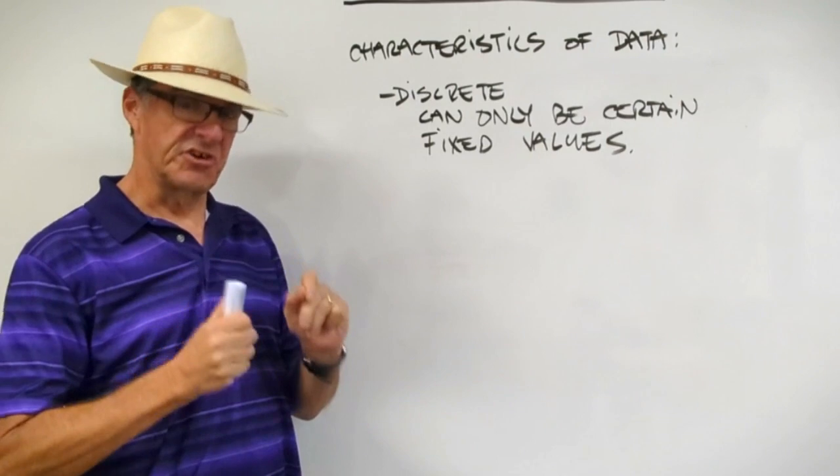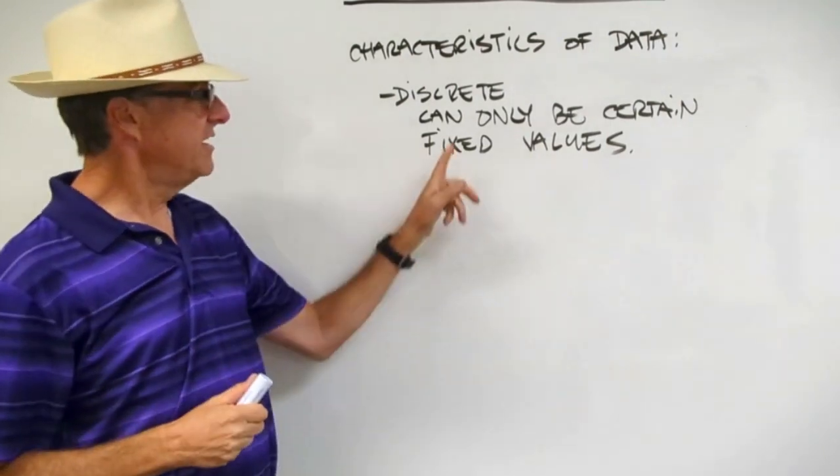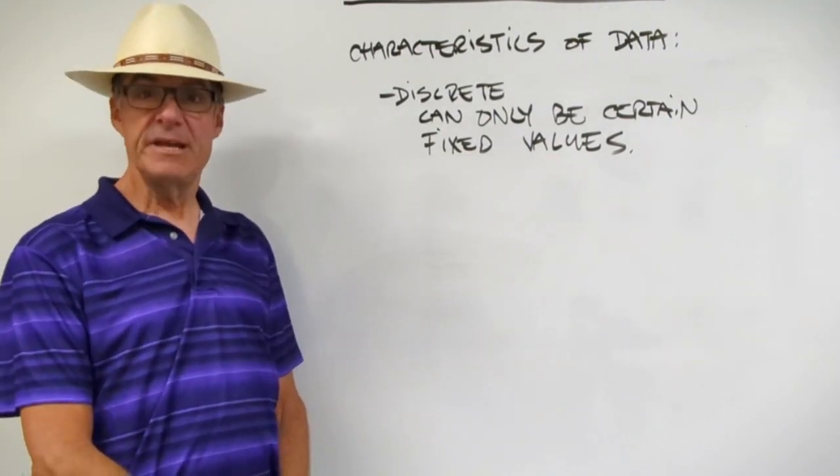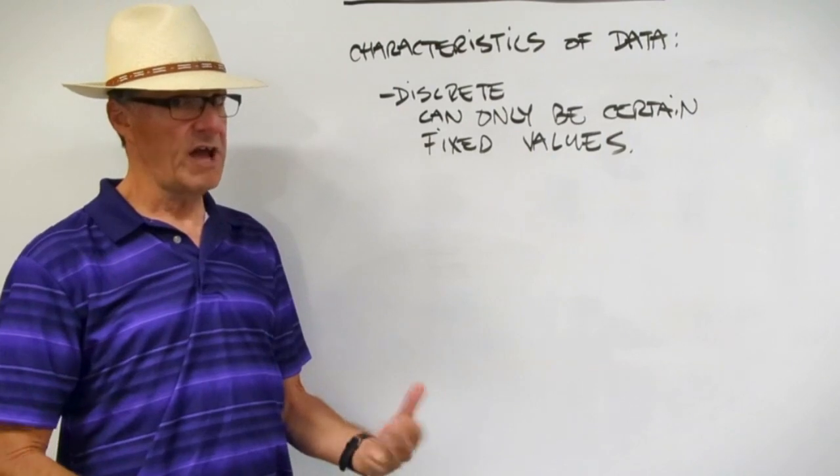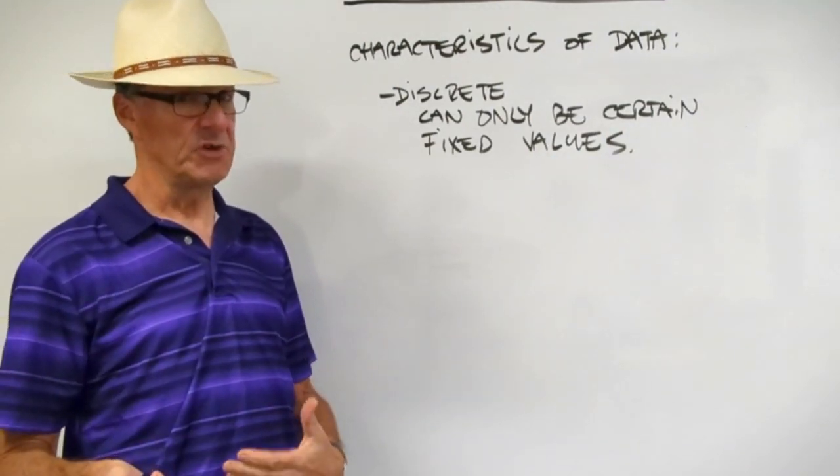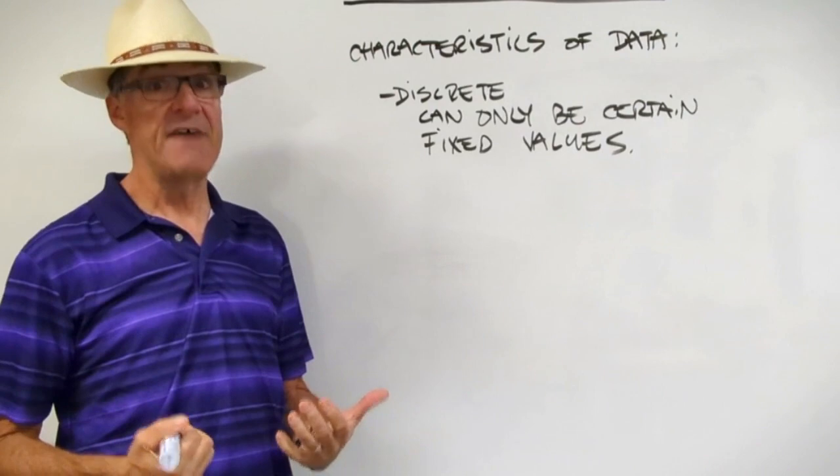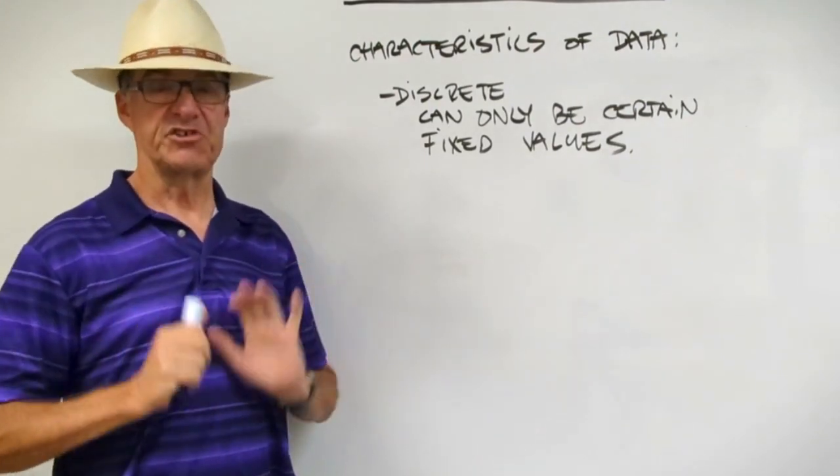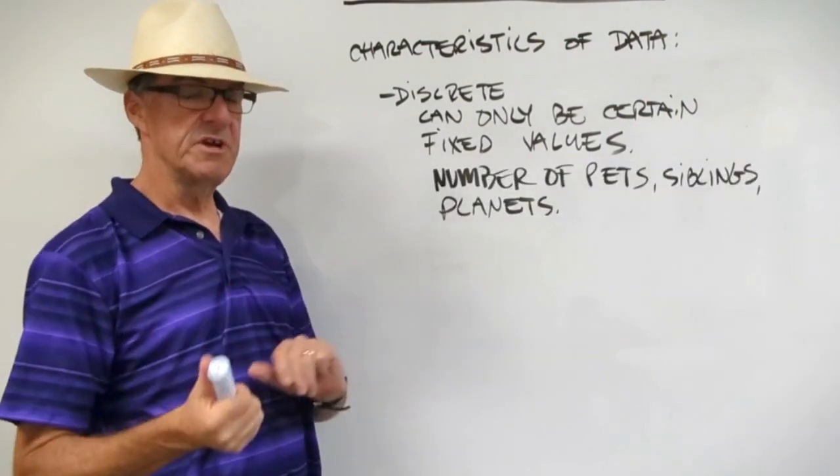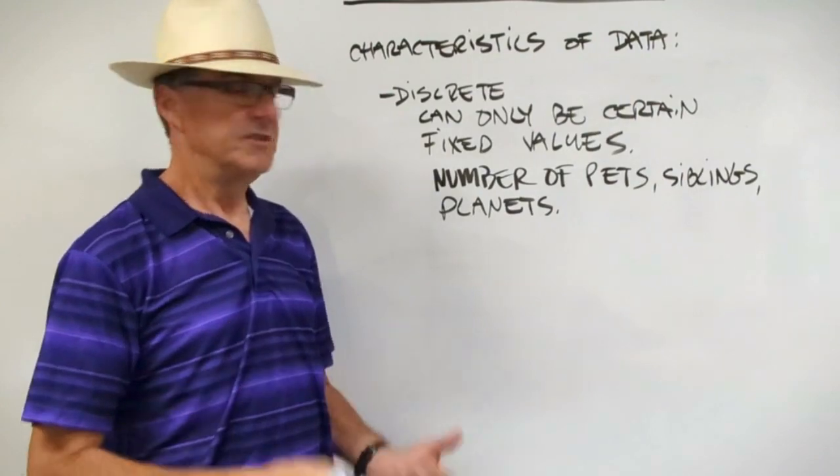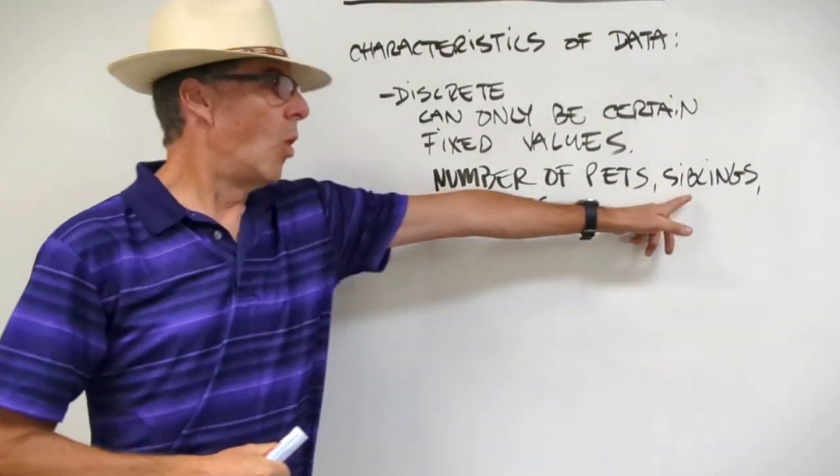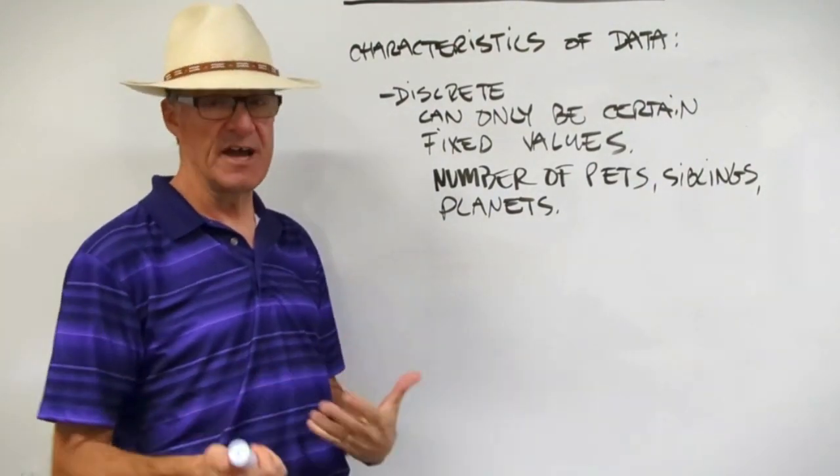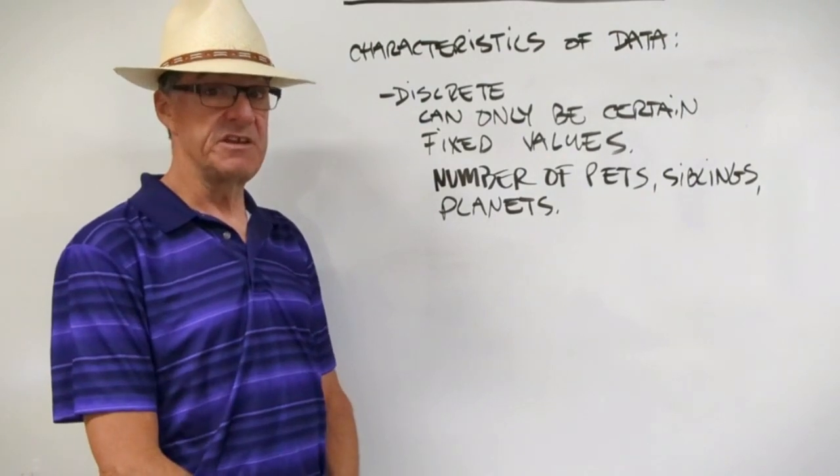Discrete data is a certain kind of data and it can only be certain fixed values. For example, how many pets do you have at home? You don't have 1.5 pets. You have one or two. You don't have half of a pet. So think of a couple other examples for discrete data. One way to look at discrete data is the number of somethings. So you don't have one half of a sibling or one half of a planet. You have one planet, two planets, or like eight planets or nine planets.